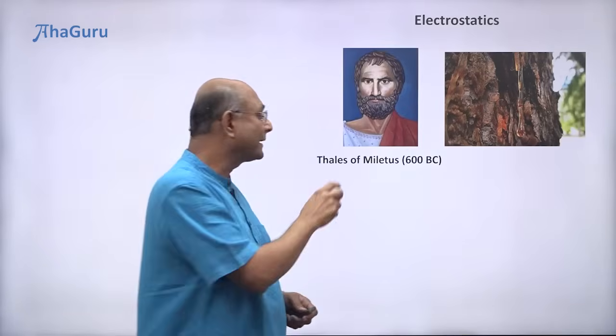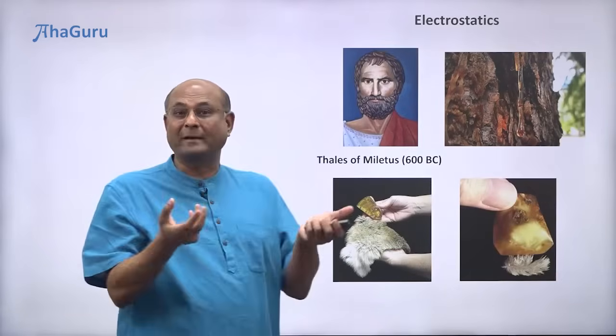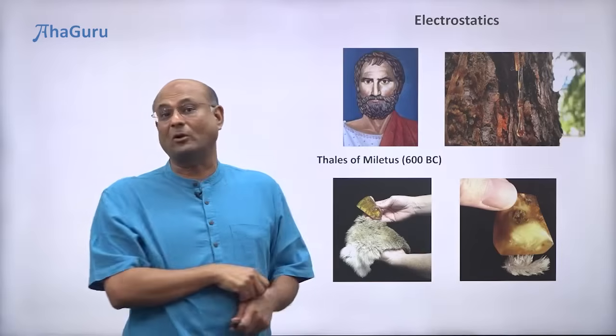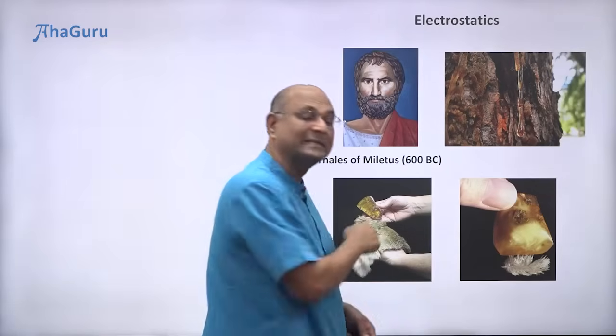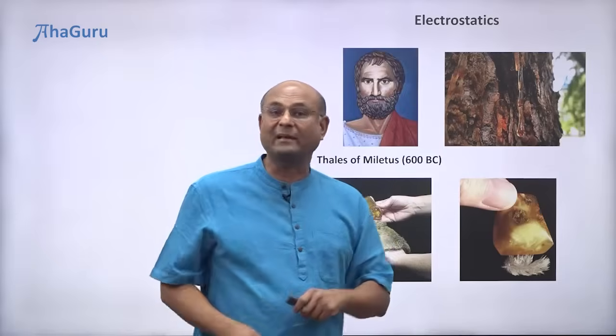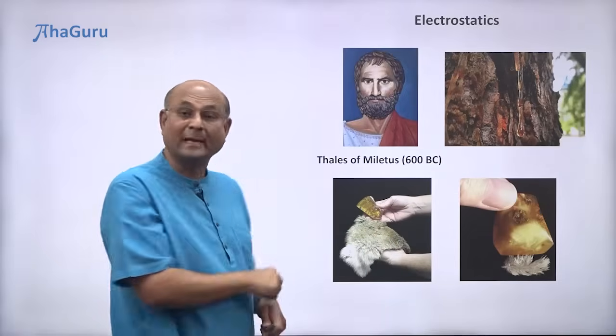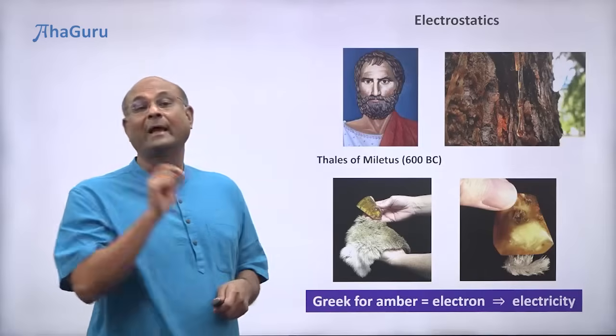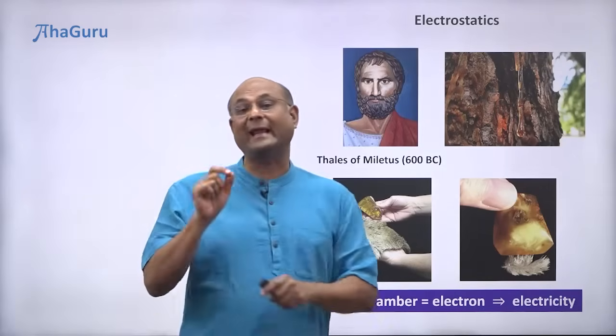If you take amber, usually used to make jewelry, and rub it on a piece of fur, then amber starts lifting up things, light things like feathers. So Thales observed this. The Greek word for amber is electron and so from that we get the word electricity.